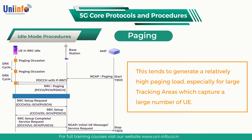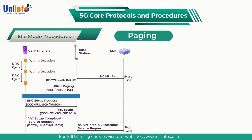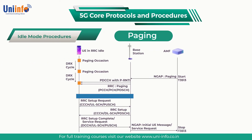This tends to generate a relatively high paging load, especially for large tracking areas which capture a large number of UEs. Specific core network implementations may make certain assumptions regarding the UE location. For example, if a UE releases its connection from a specific base station and then a paging procedure is triggered 30 seconds later, there is a high probability that the UE has remained within the coverage of the same base station.